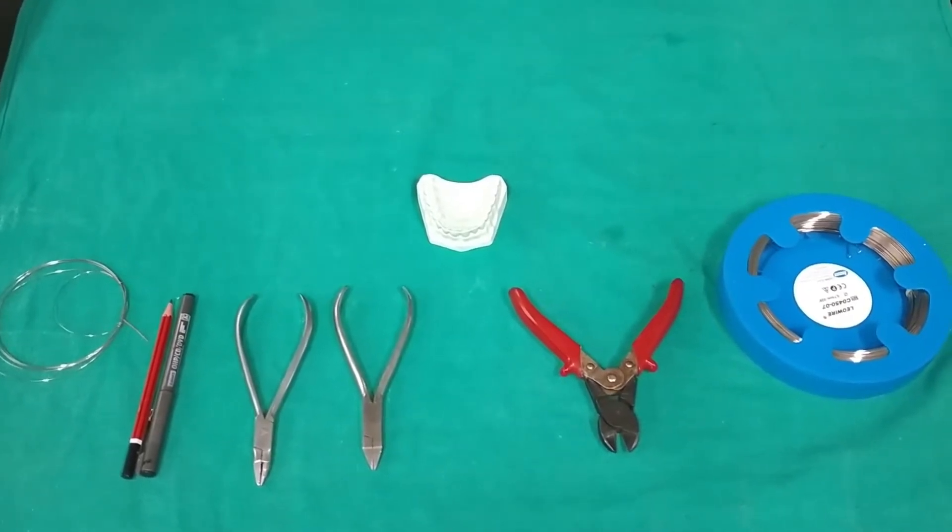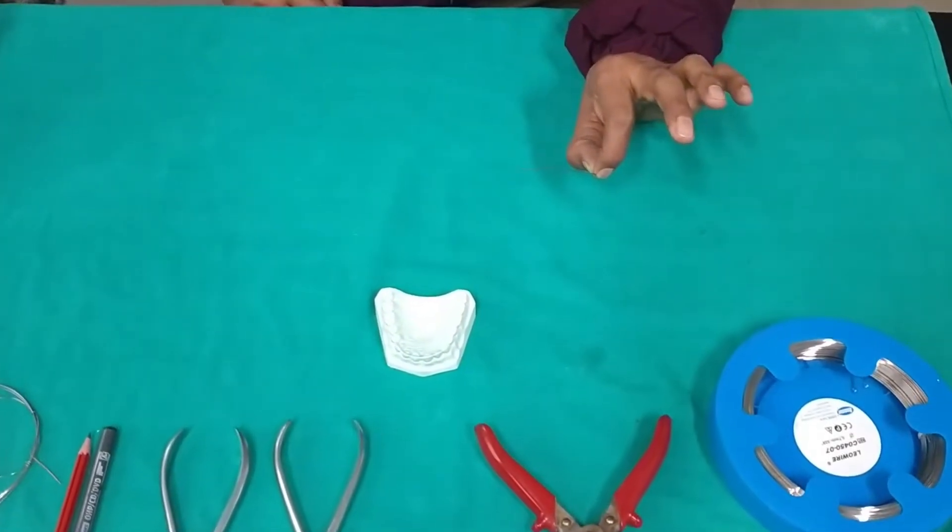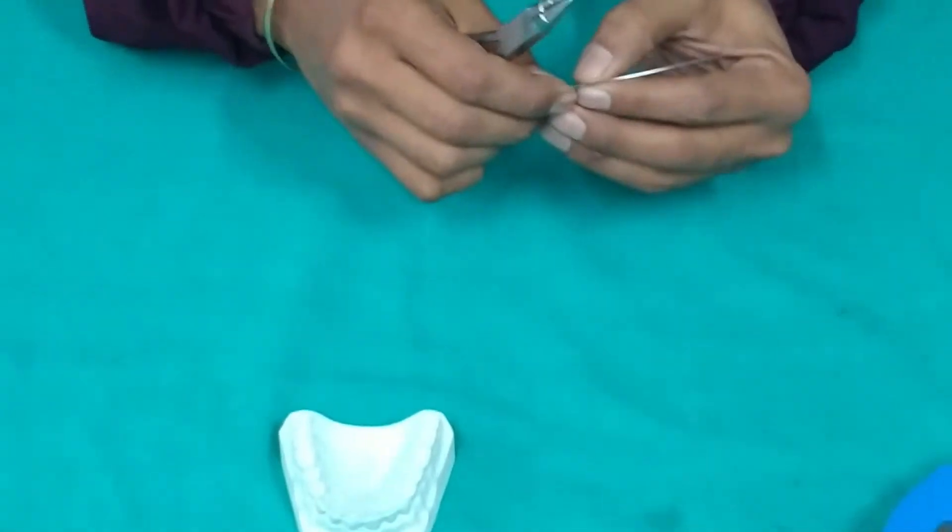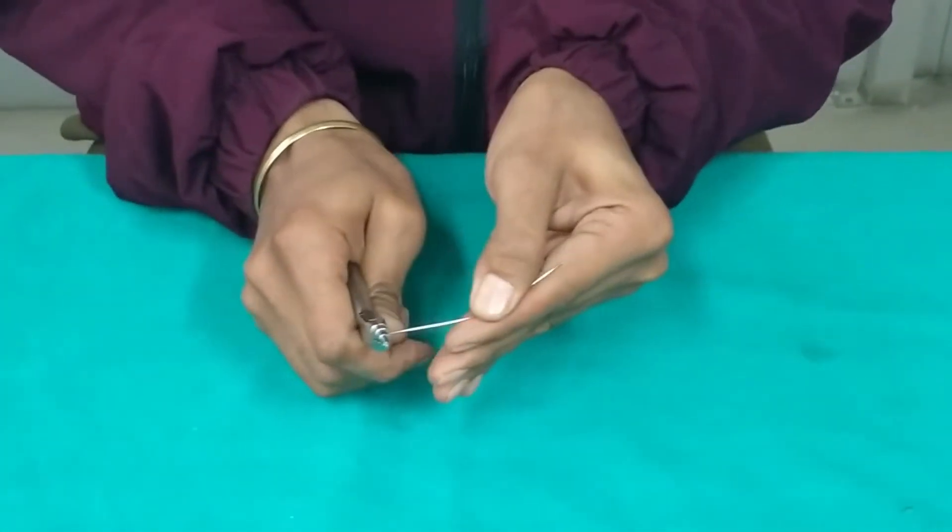For this, we will take a small segment of 0.7 mm stainless steel wire, straightening it up. We need to straighten it up before giving any bend.